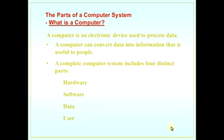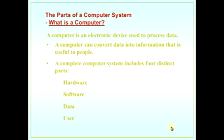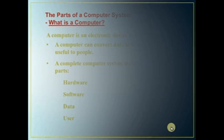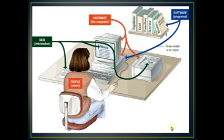A complete computer system includes four distinct parts: hardware, software, data, and users. So there are four important things — hardware, software, data, and users. Let's see a picture where the four important parts are shown.